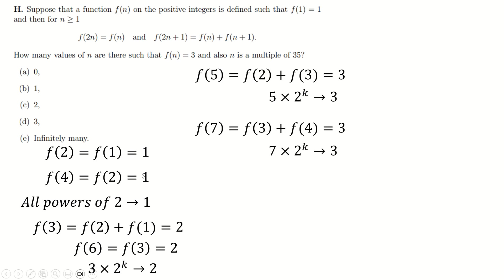How do I know this is a 50-50 guess? Because of the doubling nature: if f(35) = 3, then f(70) = 3, f(140) = 3, f(280) = 3, and so on. As soon as you have one solution, you have infinitely many, since they're all multiples of 35 obtained by doubling. So the answer is either zero solutions or infinitely many — after a bit of trial and error it quickly becomes a 50-50 guess.